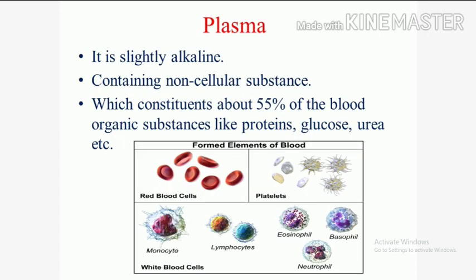Plasma. Before going to study, we should know the discoverer of plasma — Sir William Crookes. Plasma is of a slightly alkaline nature. The pH of acid is 0 to 6, neutral is 7, and pH of alkaline is 8 to 14. In between neutral 7 and alkaline 8, the pH of plasma is slightly alkaline at 7.4, ranging from 7.35 to 7.45.